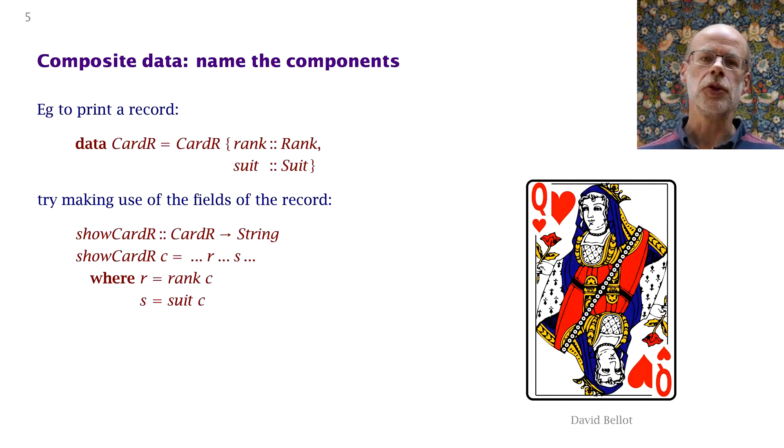If you're writing a program that consumes some composite data, like a record, the advice is to name the components of that composite data. So here we're consuming a playing card. A playing card has a rank and a suit. We're probably going to need the rank and the suit in our solution, so let's start by naming them. R is the rank, S is the suit, and now we have to do something with R and S.